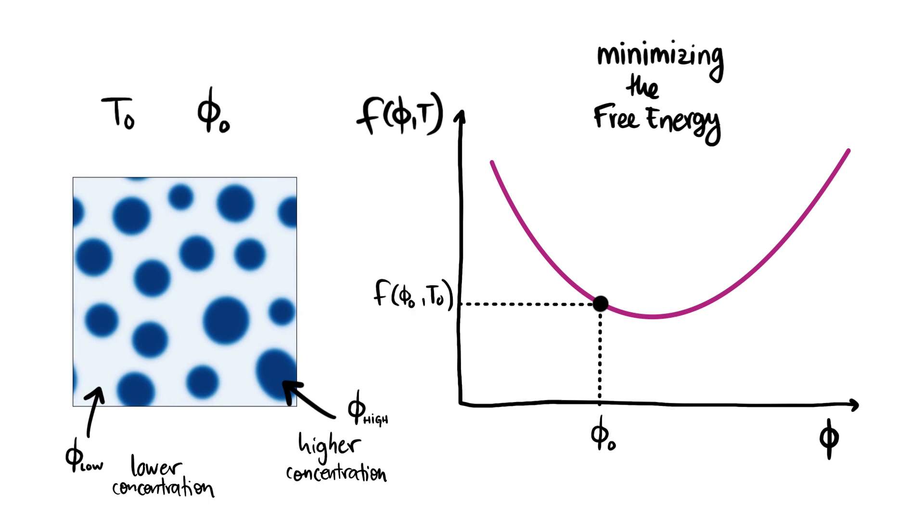We want to know if this hypothetical demixed state would have a lower free energy density than that of the homogenous state. The total free energy density of this situation would be half that of the higher concentration and half that of the lower concentration.